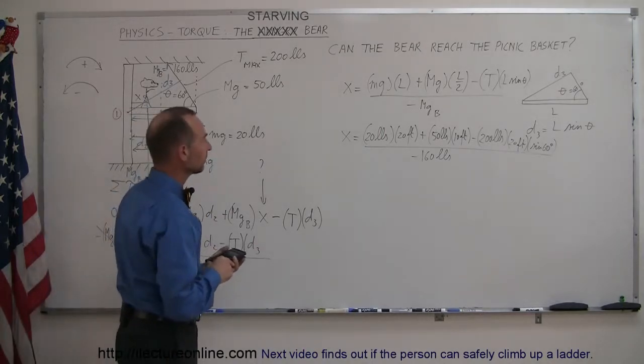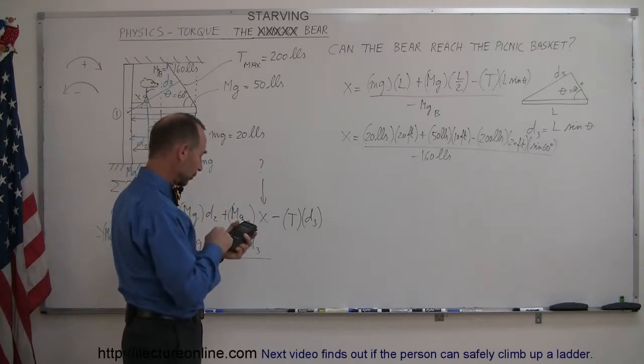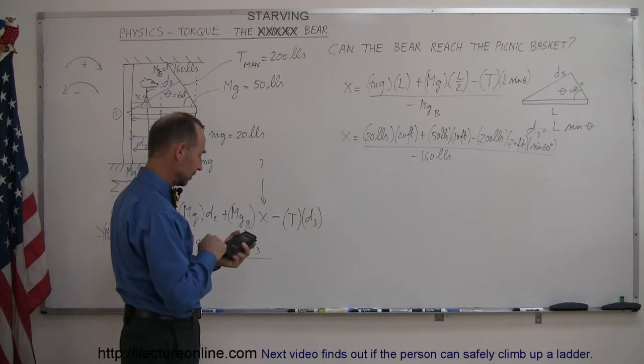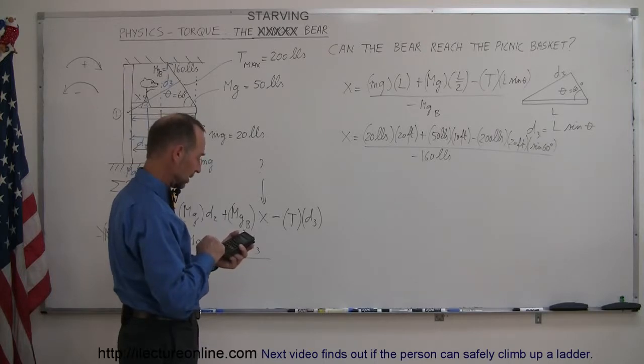Using a calculator, so we get 20 times 20, that's 400. Plus 10 times 50, that's plus 500. Minus 200 times 20 times the sine of 60.